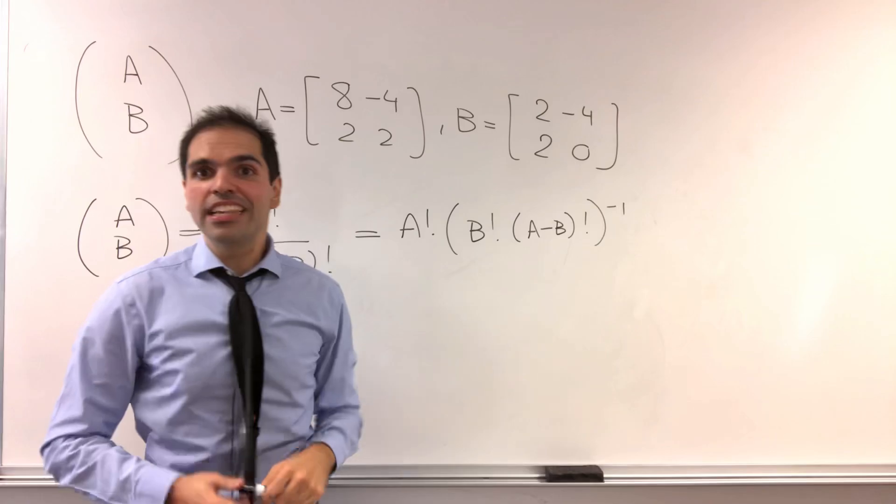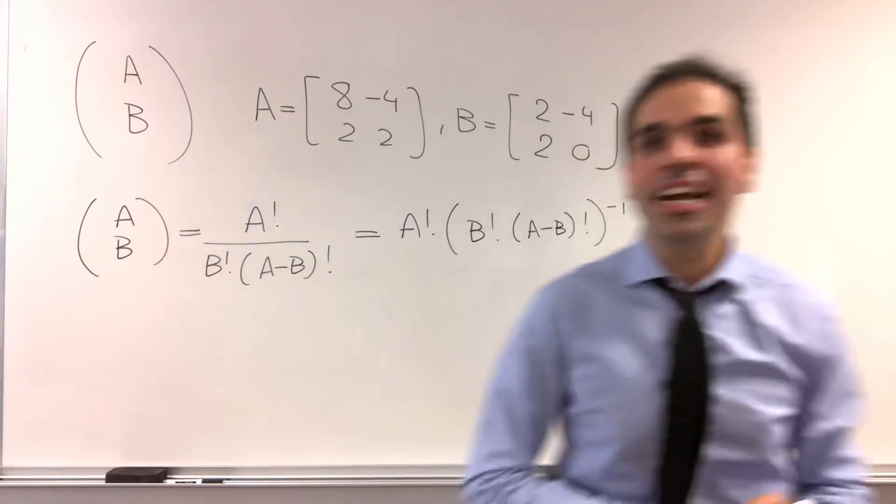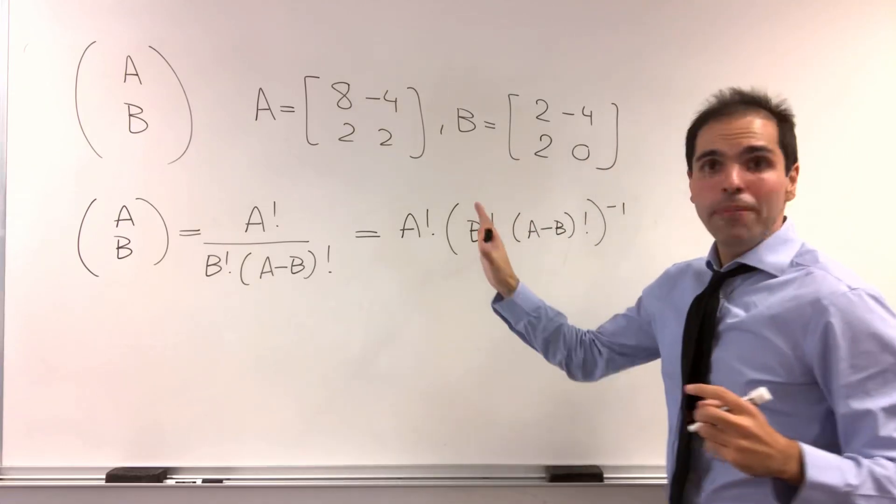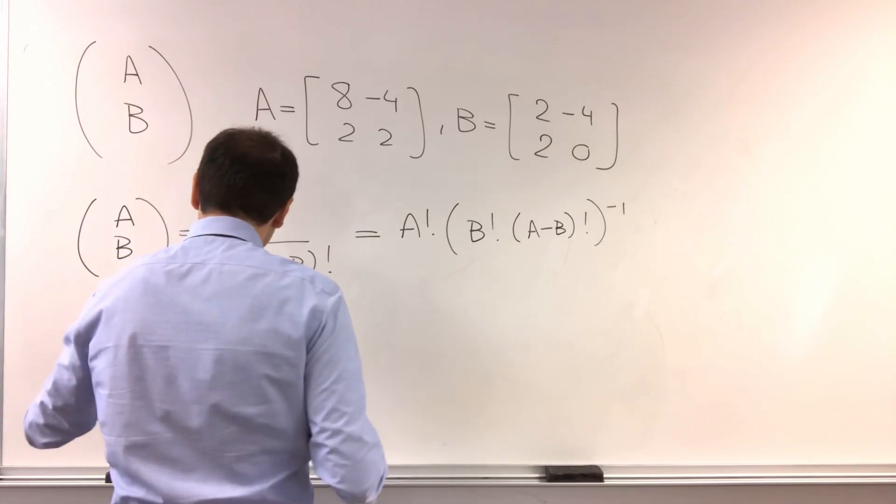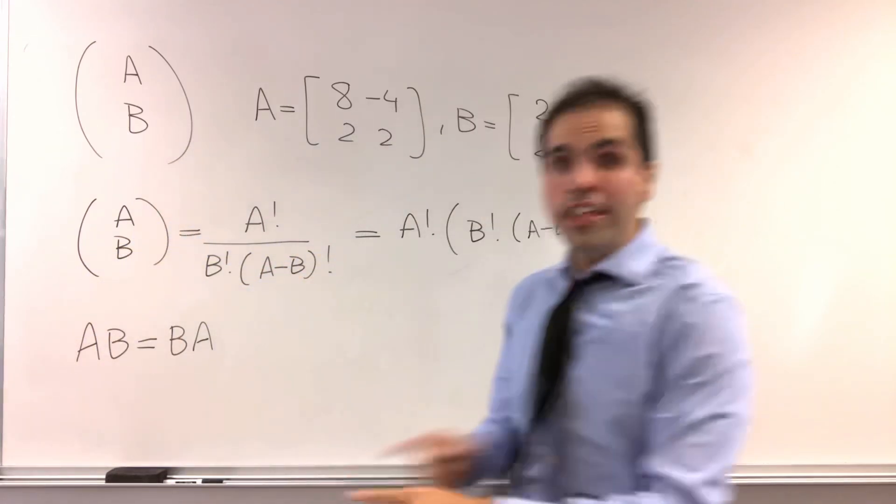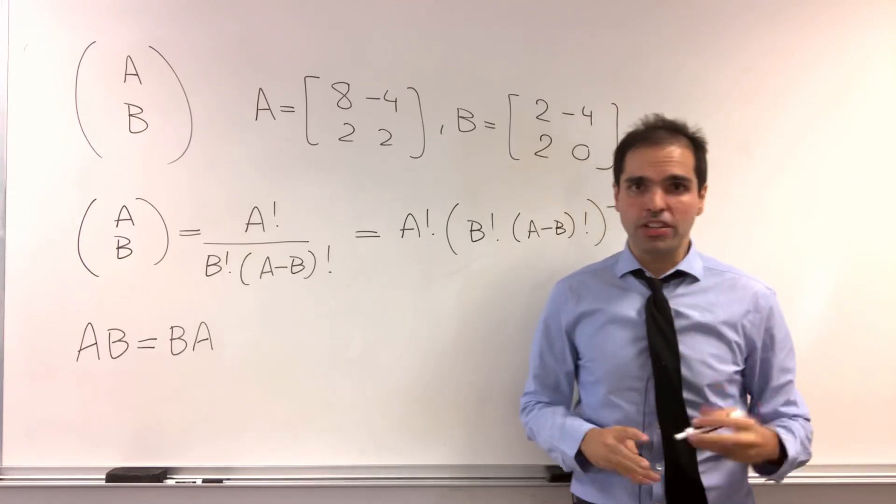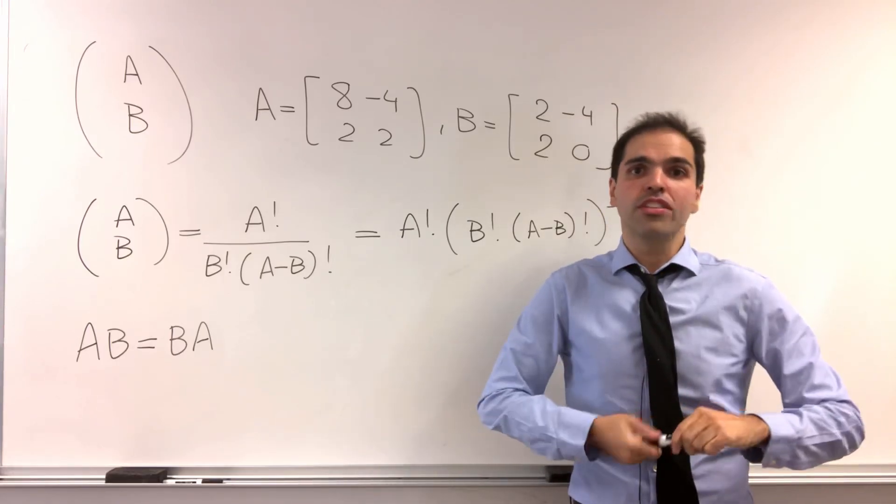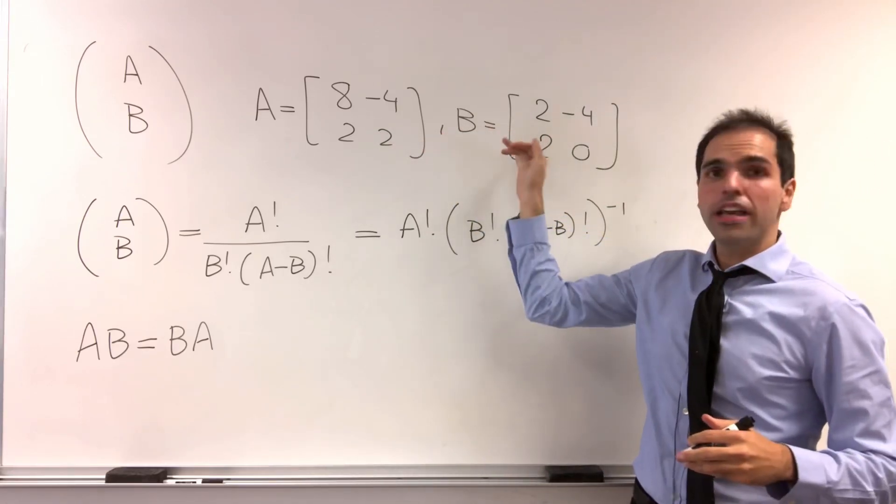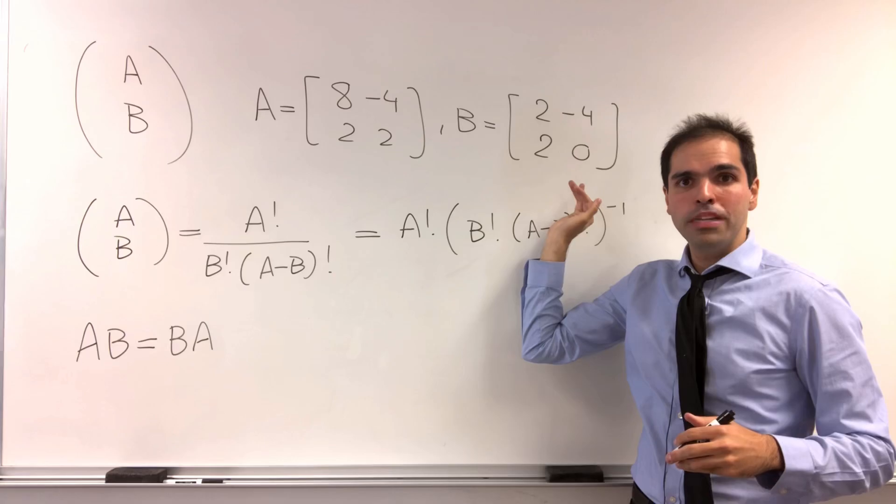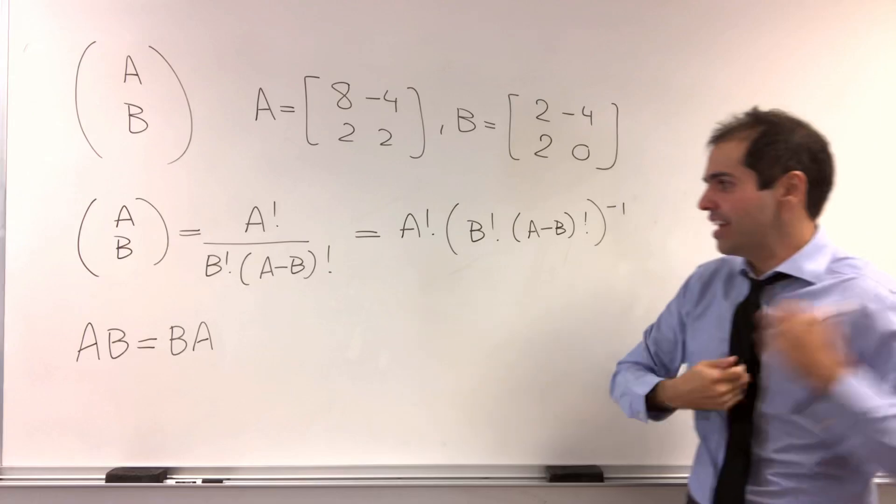Okay, why did I say it doesn't matter? Because it turns out those matrices a and b are very special. Because if you calculate a, b, it turns out it equals to b, a here. So they commute. And commuting matrices, they have a very special feature, which I've shown on a different video. Because not only can you diagonalize a and b, but you can actually diagonalize them with the same eigenvector.